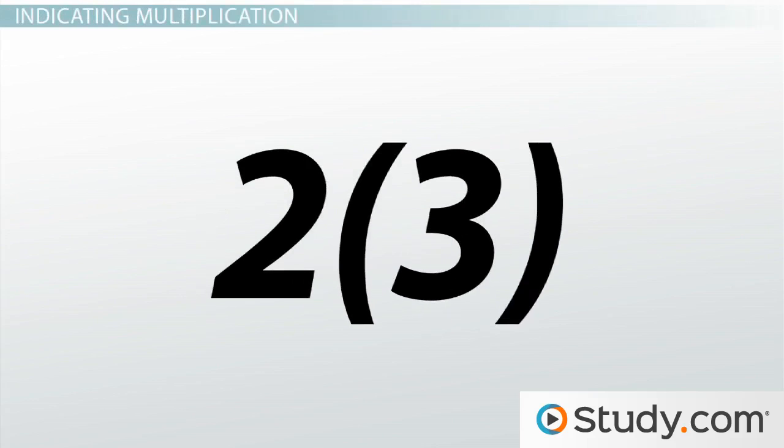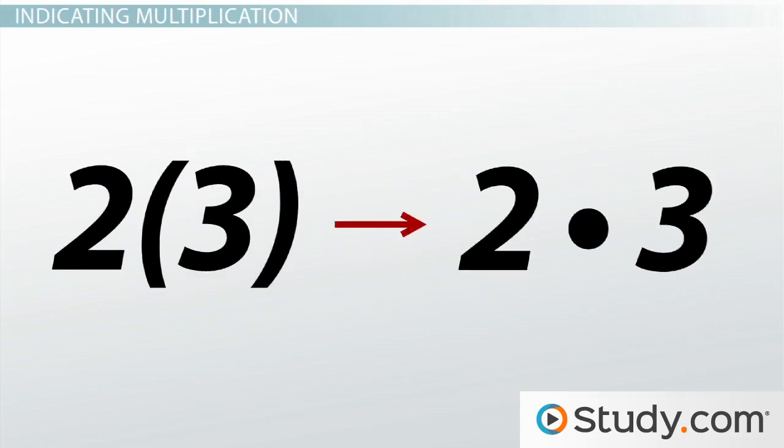When a number appears next to another number with parentheses, you need to multiply the two numbers. For example, when you see 2(3), you multiply two and three.